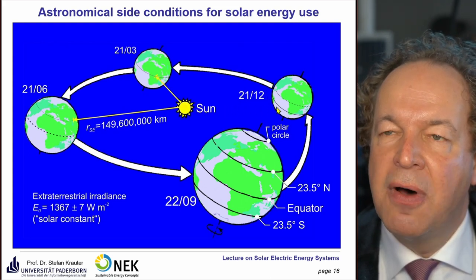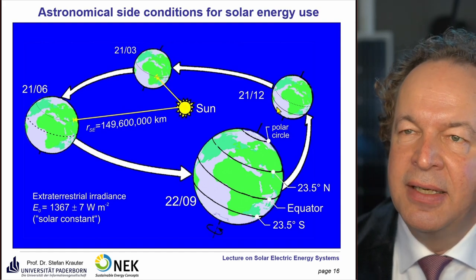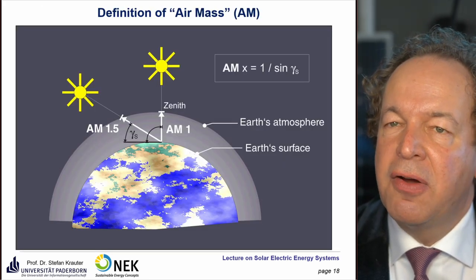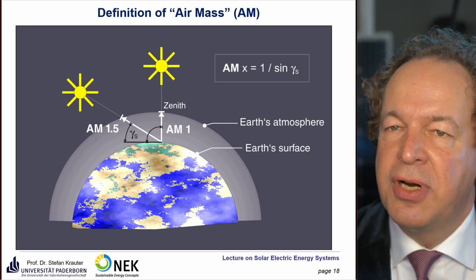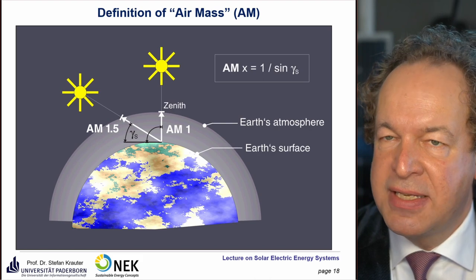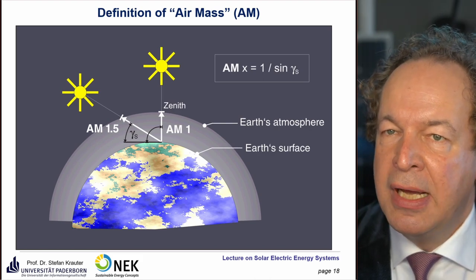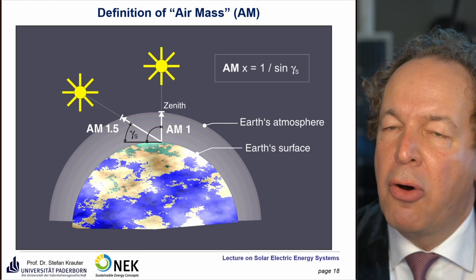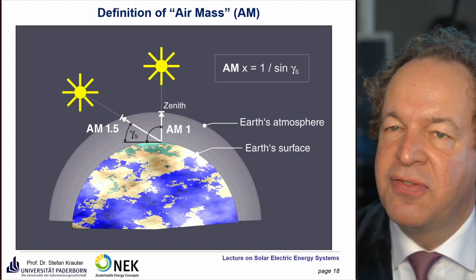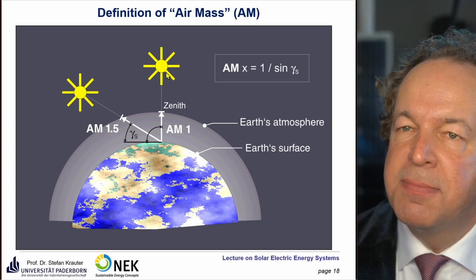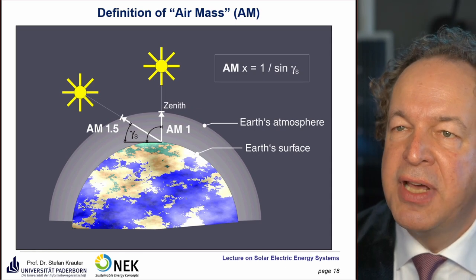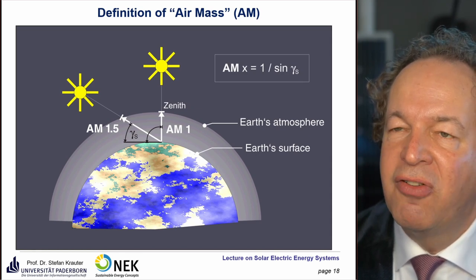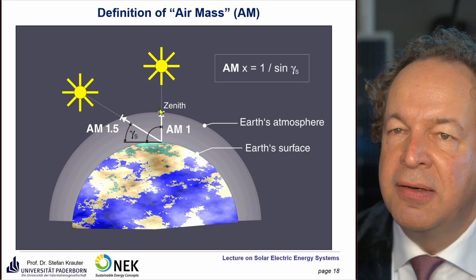The southern hemisphere receives more solar irradiance in December. The atmosphere absorbs different parts of the spectrum in different ways, so it's important to know the path length of sun rays through the atmosphere. The shortest path occurs when the sun is perpendicular to the Earth's surface. Between the equator and 23.5 degrees north and south, we have perpendicular irradiance for at least part of the year.